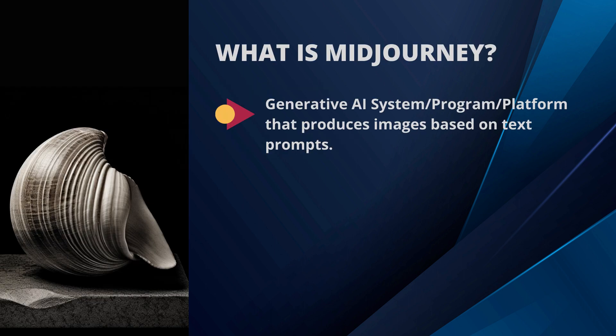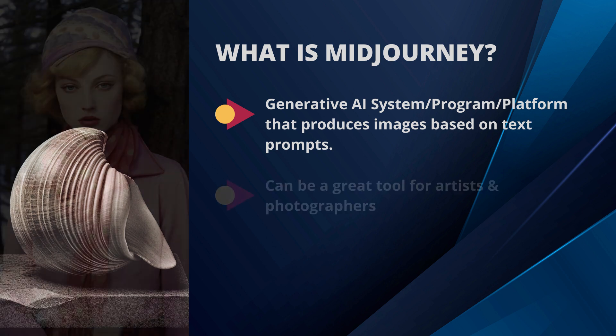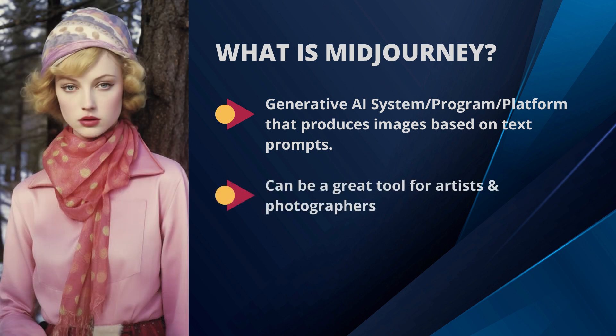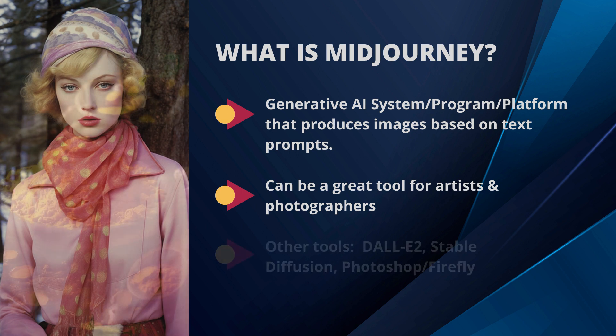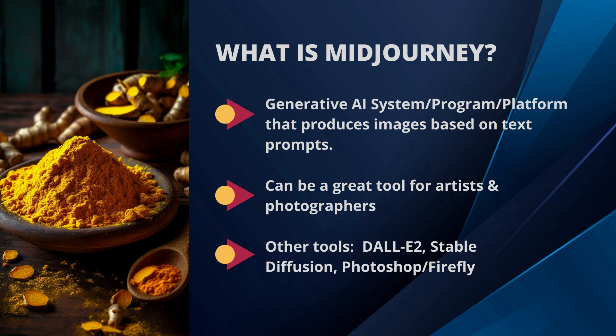So what is MidJourney? MidJourney is a generative AI system that produces images based on text prompts. You enter a description of what you want the program to create, and it generates some images based on that description. I think it's a great tool for coming up with ideas for photos and illustrations. There are other AI-powered image generators, including DALL-E 2 and Stable Diffusion.